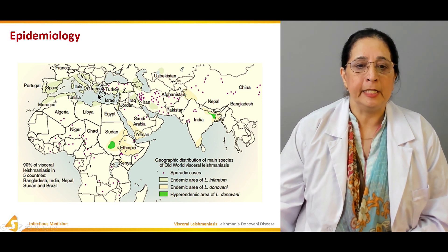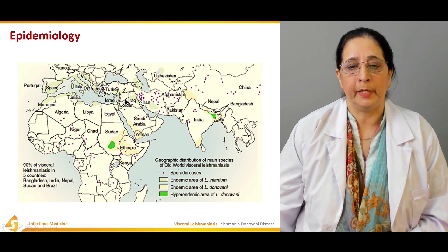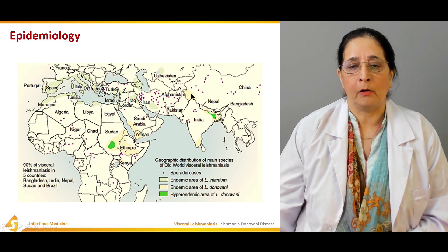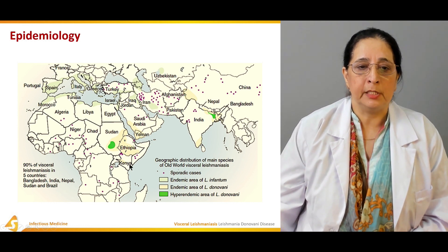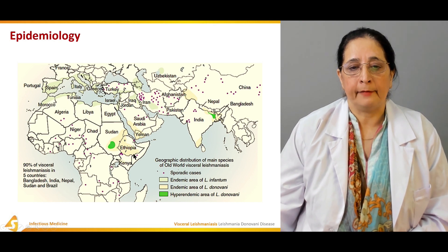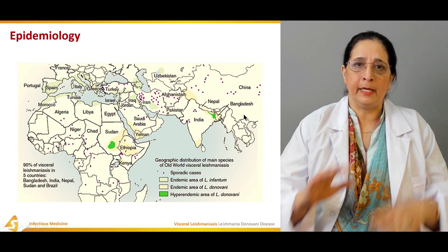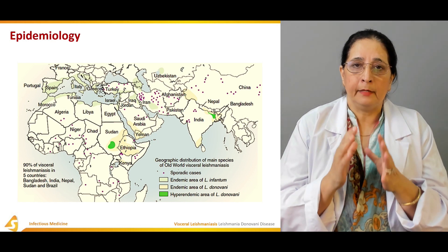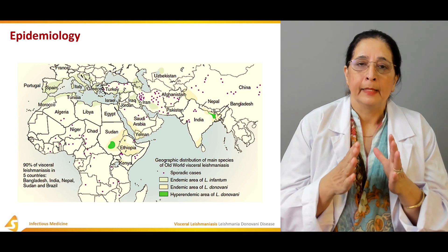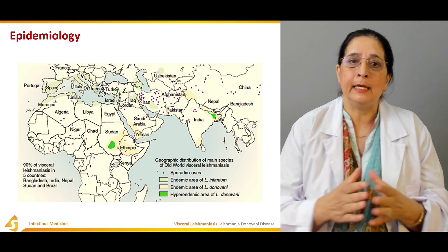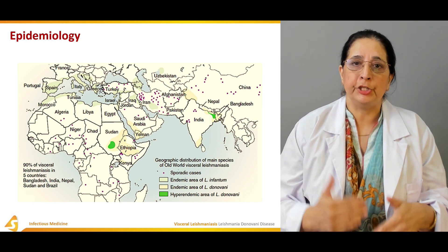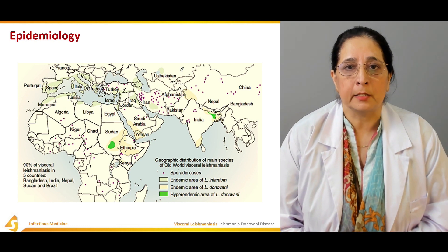The light greenish areas on the map represent Leishmania infantum endemic regions, and the off-white areas represent Leishmania donovani. It is a large geographic spread covering Sudan, Ethiopia, India, Nepal, Bangladesh, Iran, Iraq, Spain, Morocco, and Tunisia. Two separate species are endemic in different parts of the world.